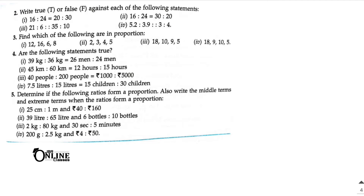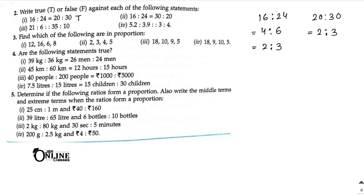Sum number 2: first one — 16 is to 24 equals 20 is to 30. If you divide 16 and 24 by 4, you get 4 is to 6, then divide again by 2 to get 2 is to 3. Next, 20 is to 30 — divide by 10, it's also 2 is to 3. So they are equal — the first one is true.